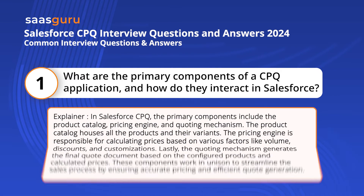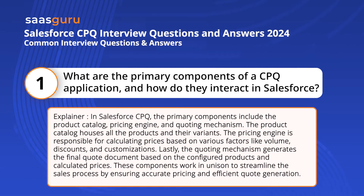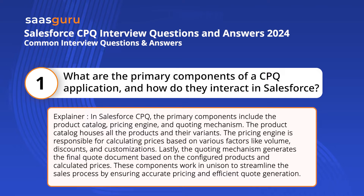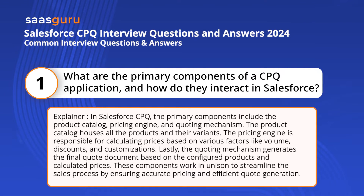In Salesforce CPQ, the primary components include the product catalog, pricing engine, and quoting mechanism. The product catalog houses all the products and their variants. The pricing engine is responsible for calculating prices based on various factors like volume, discounts, and customizations.